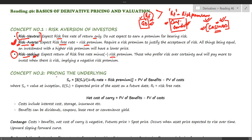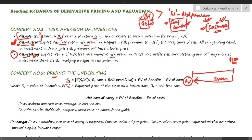Concept number two: pricing the underlying. How do we determine the price of an underlying? It is very simple. If a security is expected to give $100 in the future — say one year later — then the price of this security today should be the present value of that $100 based on the time value of money. So we discount that $100 to today's value. S0 means the spot price at time zero, which is today, and capital T denotes expiry.